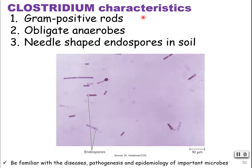The genus are gram-positive rods. They are obligate anaerobes, meaning they must — they cannot grow in the presence of oxygen. They also have a particular needle shape endospores, and they're found in soil.